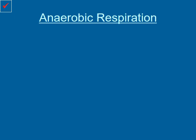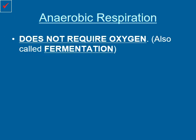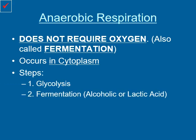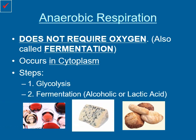Now we discussed aerobic respiration. Let's go ahead and look at the other side of the coin, which is anaerobic. Anaerobic respiration does not need oxygen. It's also known as fermentation. This process occurs entirely in the cytoplasm — it never makes it to the mitochondria. It only has two steps, as opposed to the three found in aerobic. It enters glycolysis first, and then will either go through alcoholic or lactic acid fermentation, depending on the type of cell. These can be used to create a wide variety of different products, such as wine, cheese, and even bread.